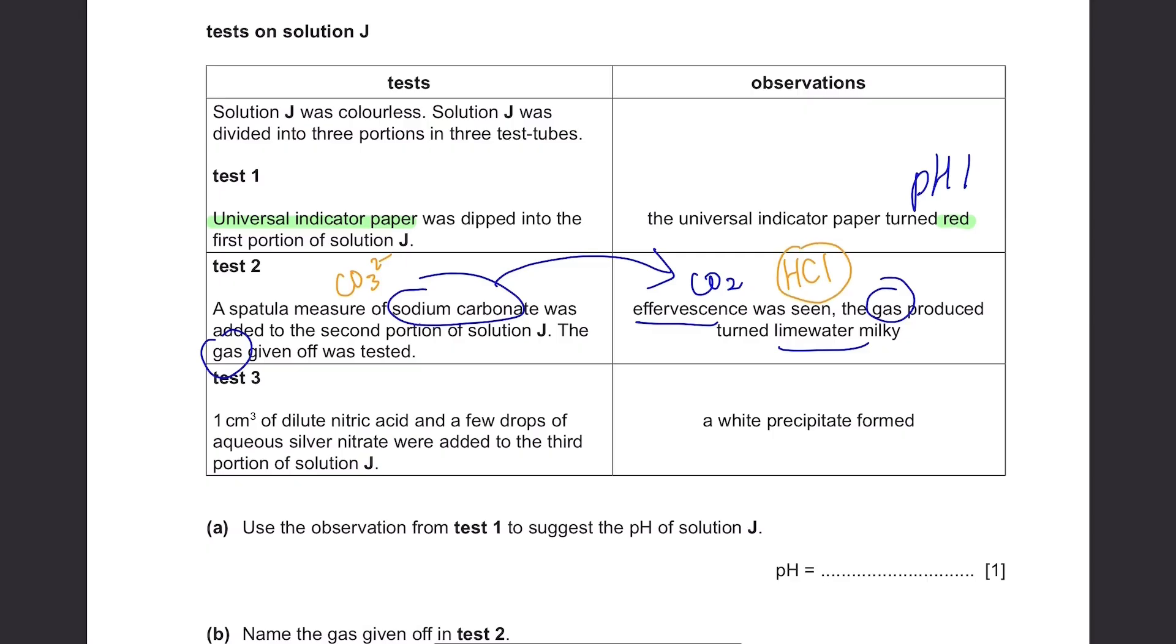Test 3. 1 cm cubed of dilute nitric acid and a few drops of aqueous silver nitrate were added to the third portion of solution J. A white precipitate formed. This is a test for halide ions. Cl-, Br-, and I-. If the result is a white precipitate, it means that chloride ions are present.